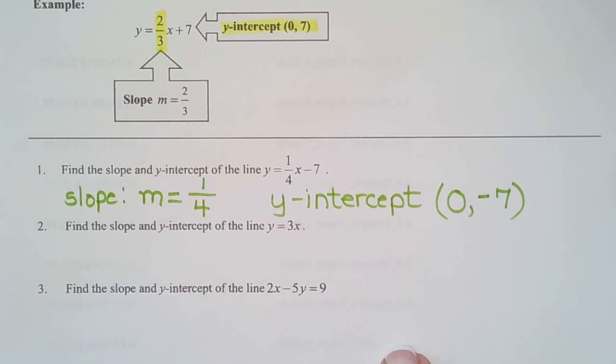So, that means this graph crosses the y-axis at 0, negative 7. And to plot additional points, we rise one, run four, plot a point, rise one, run four, plot a point, and so on. So, now we have enough information in order to graph it.